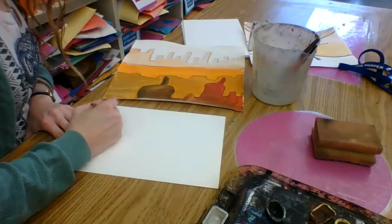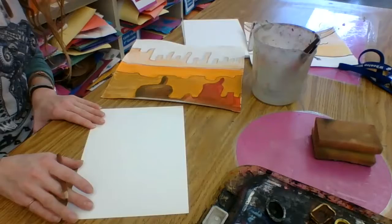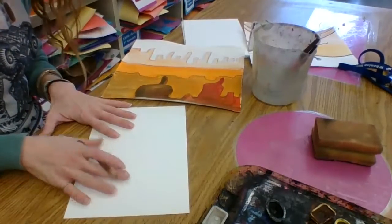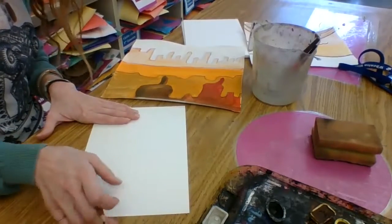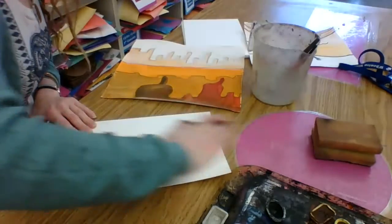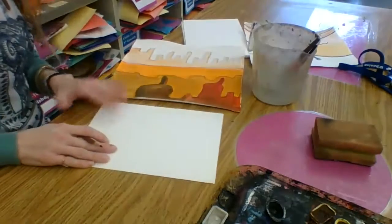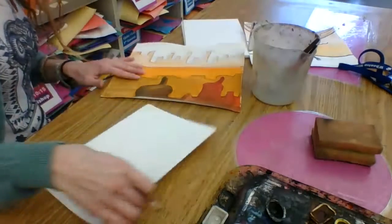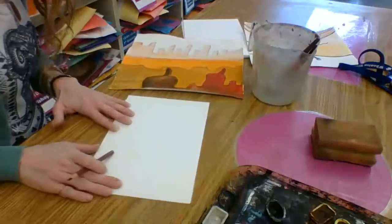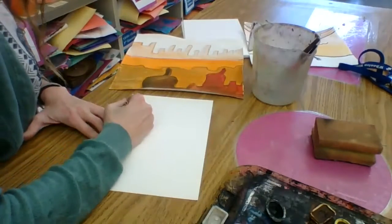So I'm going to first start by deciding if my paper is going to be the orientation, is going to be portrait. Now you can do a landscape this way if you want, or landscape. This one is called landscape. It's great for landscapes because it shows the wideness of the land, but you could do it either way. Just to show you another example, I'll turn mine so that you can see. I'm going to start with this cityscape line at the top.